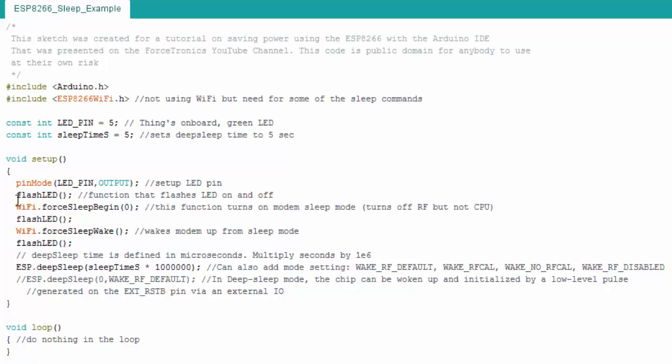I set up my LED pin for output, then I have this function that's just flash LED. This function turns the LED on, delays for a second and a half, turns the LED off, delays for a second and a half. From there, I do a forced sleep. I do Wi-Fi dot force sleep begin, which is going to turn the RF off. So we come up, we flash the LEDs, we delay for a while, then we turn the RF section off, which is modem sleep.